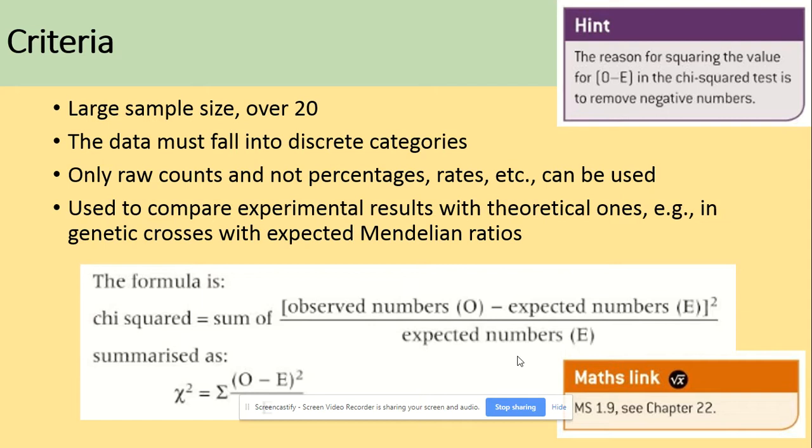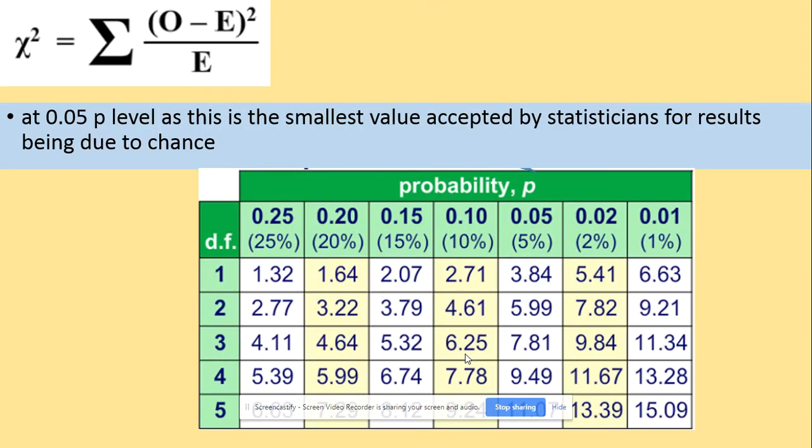So how can we work out the chi-squared test? We need the number of the observed values, we need the number of the expected values. So the equation would be number of observed minus expected squared root and then divided by the expected numbers.